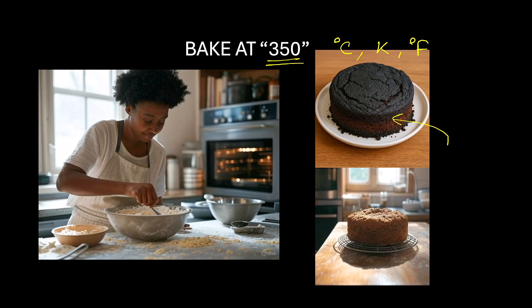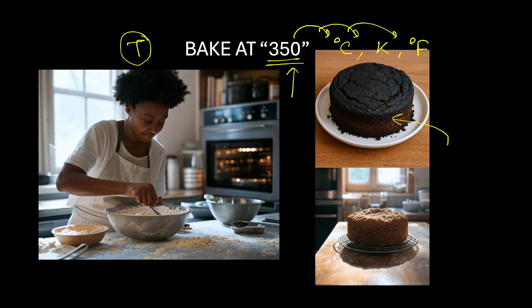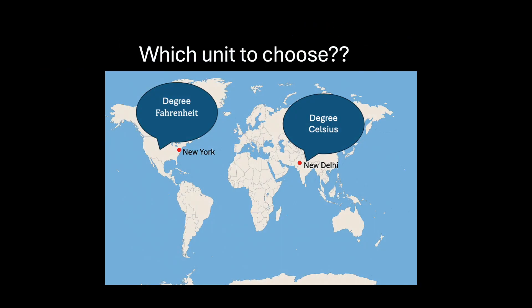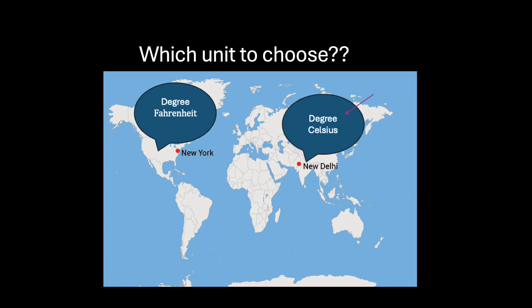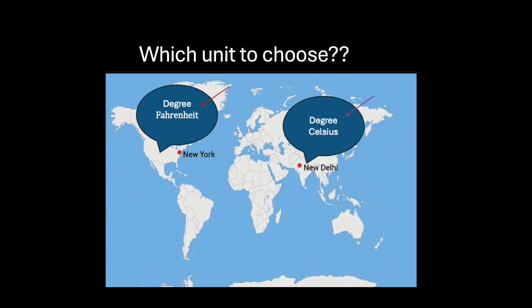Any quantitative observation or measurement, like temperature, has to be represented by a number followed by a unit. Now, which unit to choose? For example, India can use a unit of temperature as degree Celsius and America can use degree Fahrenheit. What's a big deal about it? Well, there is a big deal about it.